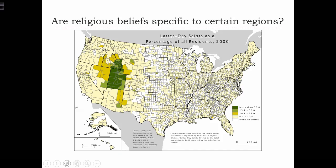What about looking at religious beliefs? Here we have a choropleth map showing county by county the percentage of the population that's LDS. This is from the year 2000. Do we see some sort of spatial pattern over here? This is a very strong indication of clustering. We have all of the high-valued LDS counties more or less centered around Utah, and then elsewhere we basically have low values everywhere else.